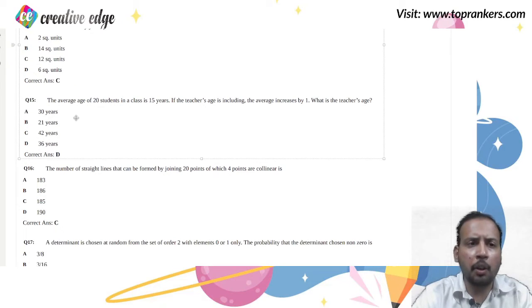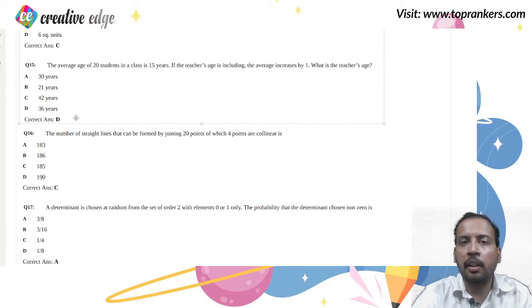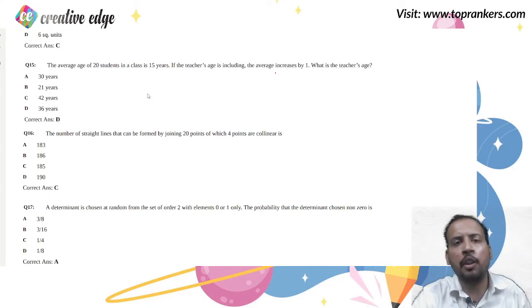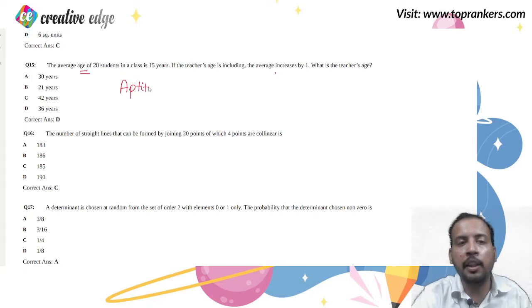Question number 15 is based on average. That is a class 8th or 9th topic where this question belongs to your aptitude part. I would not consider this question from mathematics 9th, 10th, 11th, 12th. Instead it is from class 8, that's why you can keep it in aptitude.